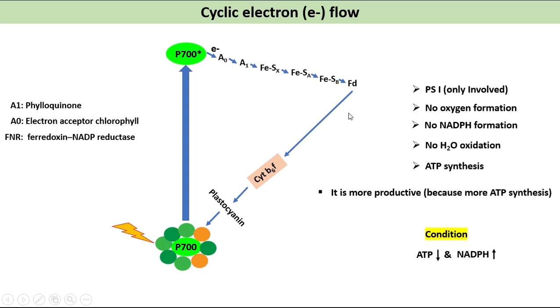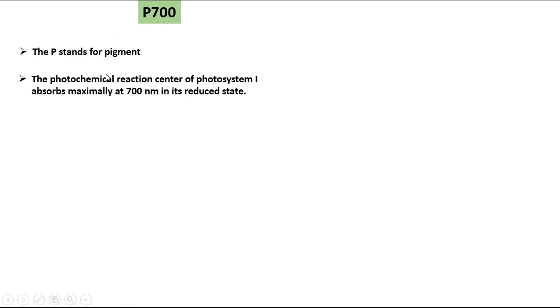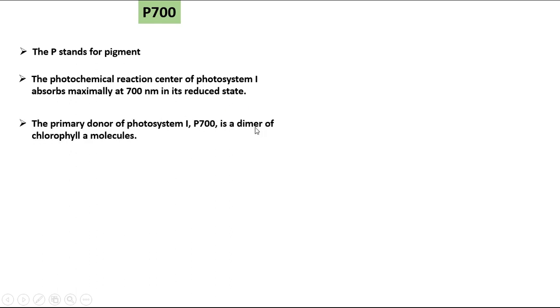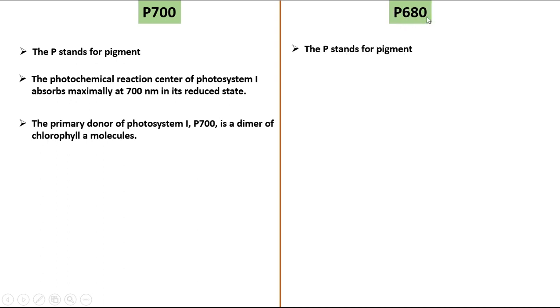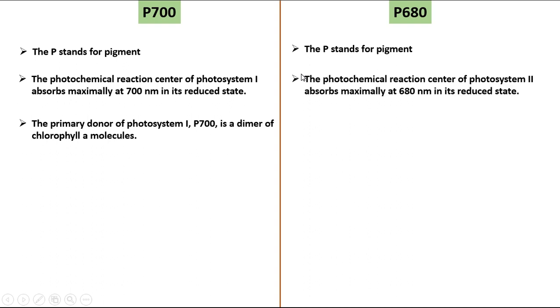P700 is the photochemical reaction center of photosystem I, where P stands for pigment. It absorbs maximally at 700 nm in its reduced state and is a dimer of chlorophyll A. P680 is the photochemical reaction center of photosystem II, absorbing maximally at 680 nm in its reduced state. The primary donor of photosystem II, P680, is a dimer of chlorophyll molecules.